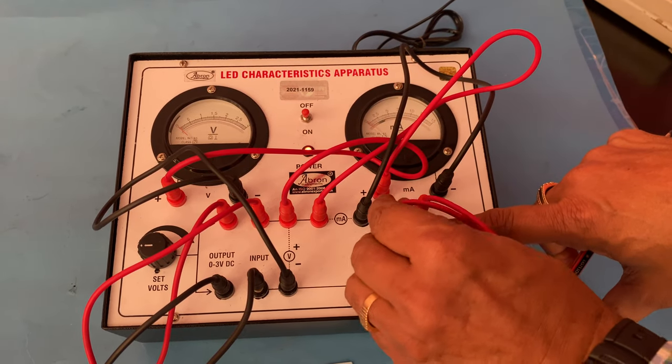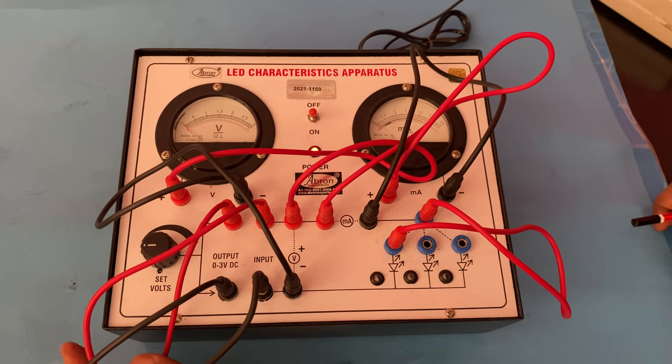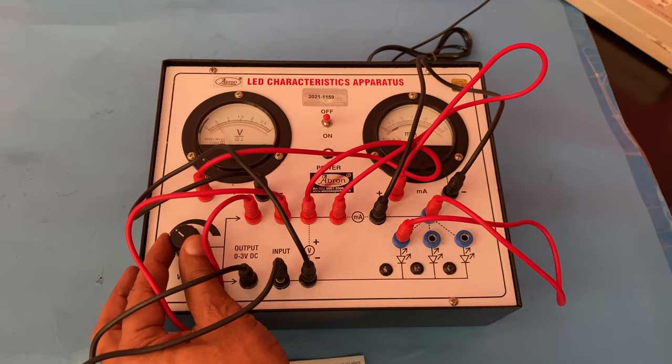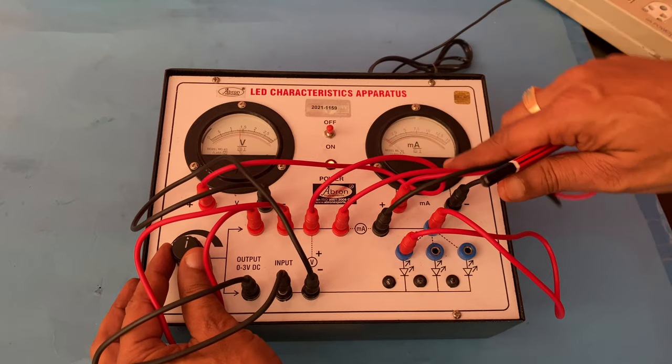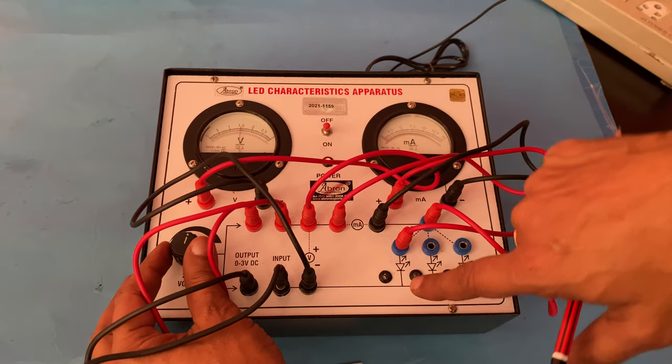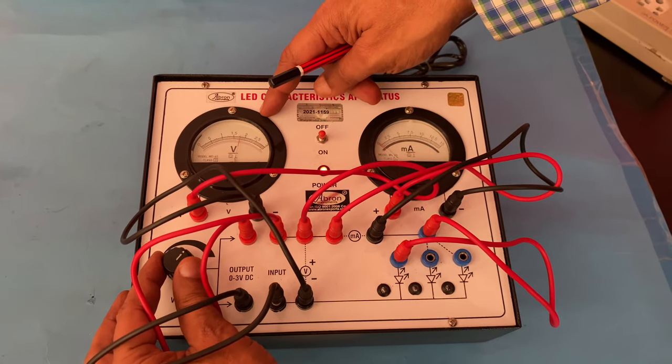I am connecting with one wire. Dotted lines means connecting. Just increase the voltage, see this. You can check: no current, no light. No current is passing yet.